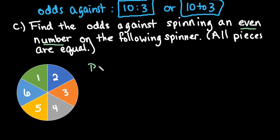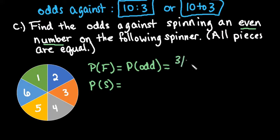First, remember it's the probability of failure divided by the probability of success. In this case, a failure would be an odd number. What is the probability of spinning an odd number? The odd numbers are 1, 3, and 5. So that happens 3 out of 6 times. P(F) = 3/6.